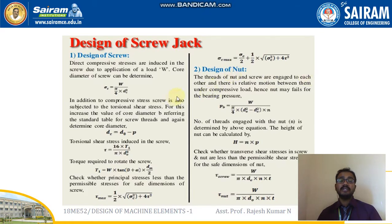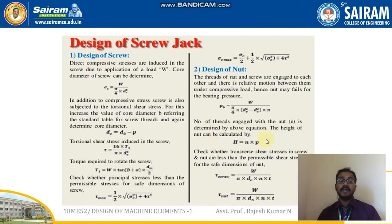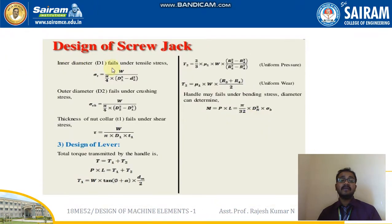The second design is the design of the nut. The threads of the nut and screw are engaged with each other and there is relative motion between them under compressive load, so the nut may fail by bearing pressure. PB = W / [(π/4)(DO² − DC²) × N]. The number of threads N engaged with the nut is determined from this equation. The height of the nut is calculated as H = N × P. Check whether the transverse shear stress in the screw or nut is less than the permissible shear stress. The allowable shear stress for the screw is W / (π × DC × N × t), and for the nut is W / (π × DO × N × t).